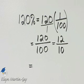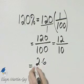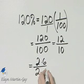Well, notice there's a common factor of 2. You can write 12 as 2 times 6, and you can write 10 as 2 times 5.